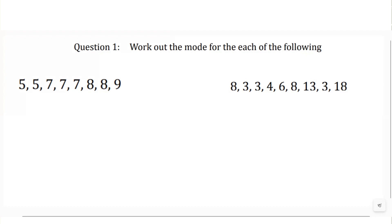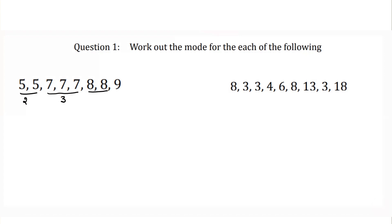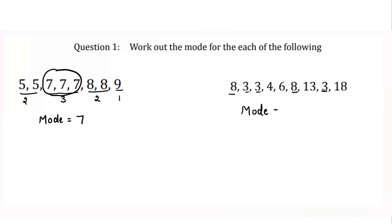Now we find the mode, which is the number repeating the maximum number of times in the data. In the first dataset, 5 repeats twice, 7 repeats 3 times, 8 repeats 2 times, and 9 repeats once — so the mode is 7. In the second dataset, 8 appears 2 times and 3 appears 3 times, so mode equals 3. It is also possible to have more than one mode — for example, if we add another 8, then 8 also appears 3 times, making the mode 3 and 8.